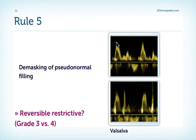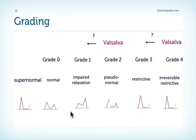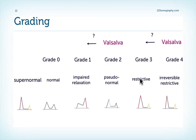Here is an example where we have an E wave which is taller than the A wave. We then perform a Valsalva maneuver and all of a sudden the A wave is taller than the E wave. We reversed the pseudonormal pattern to a relaxation pattern, thereby unmasking an elevated filling pressure. This diagram shows the different grades of diastolic dysfunction and what happens when you perform Valsalva — you can reverse a pseudonormal pattern to an impaired relaxation pattern if it is reversible, and you cannot reverse it if it is an irreversible pattern.